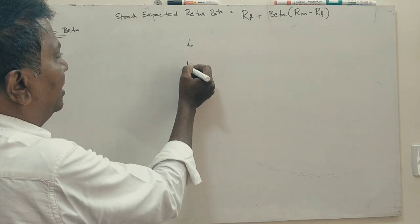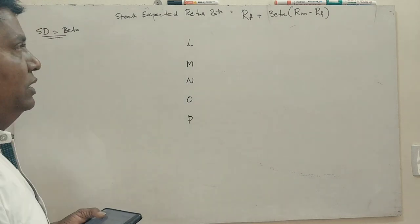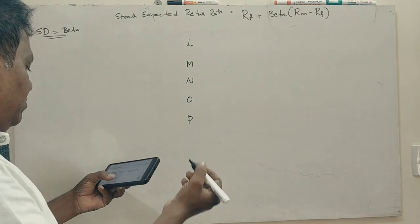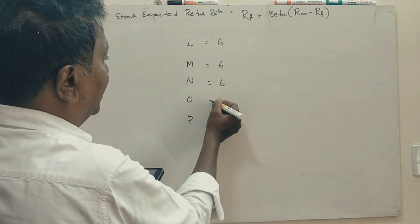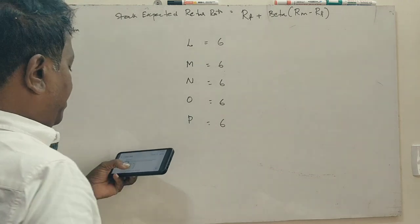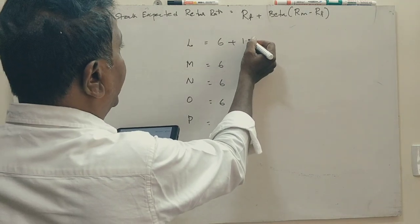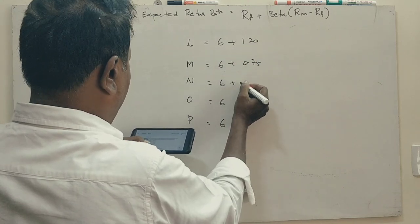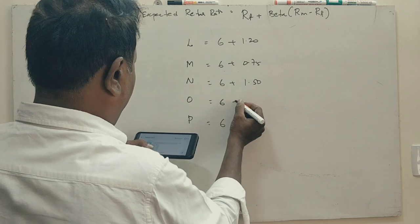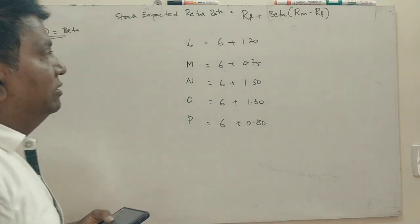That is L, M, N, O, P. See, risk-free return, 6% is data. Beta is 1.2, standard deviation is 1.2. This is 0.75, this is 1.5, this is 1.6, this is 0.80.